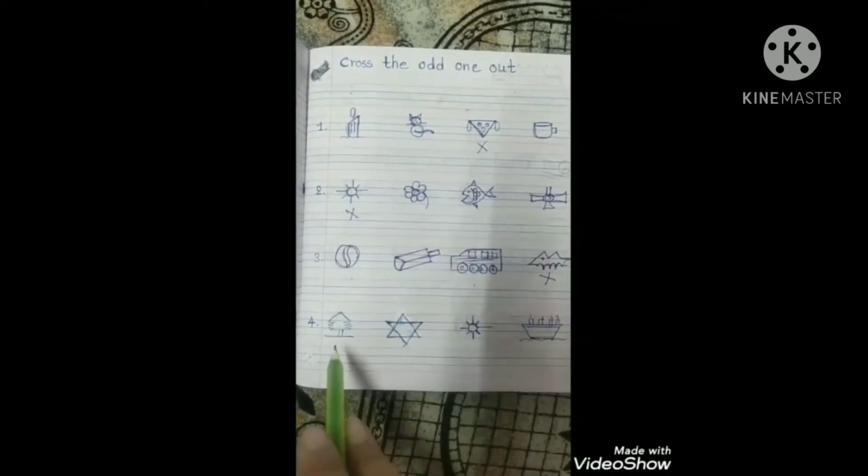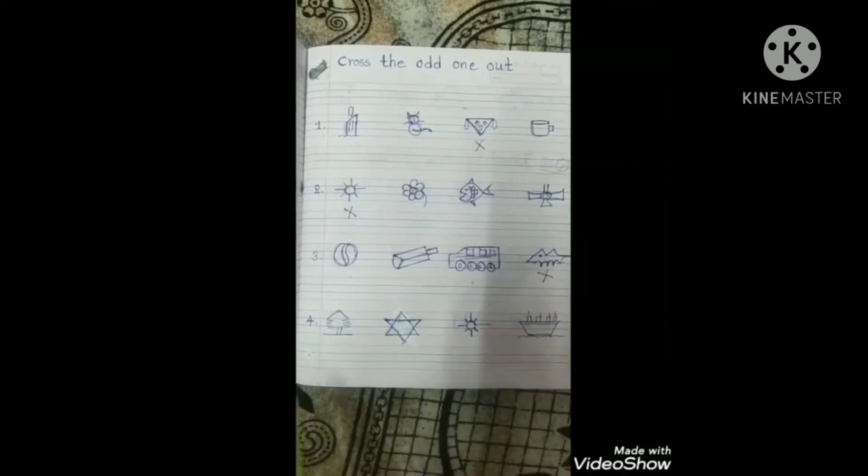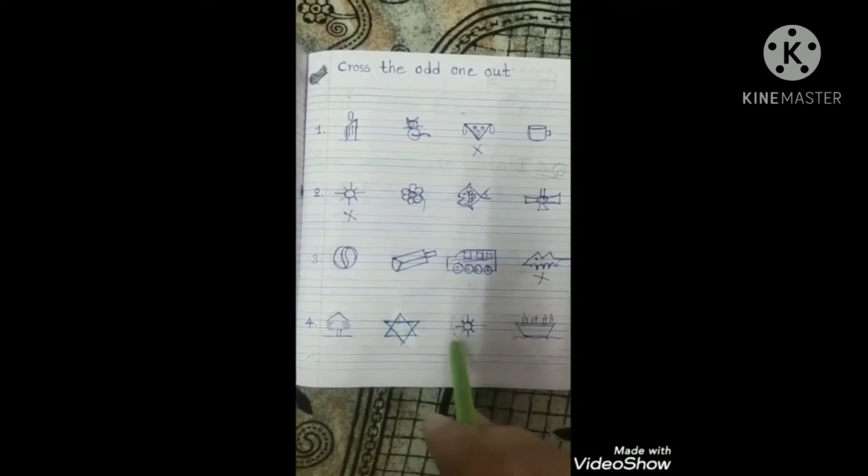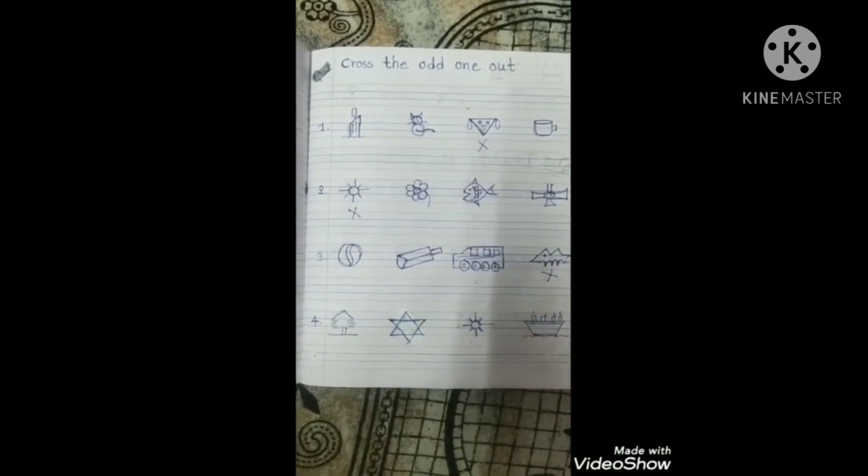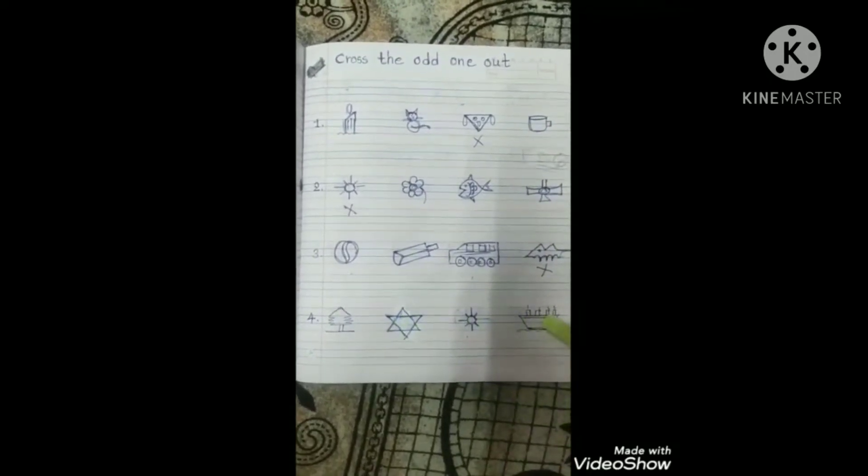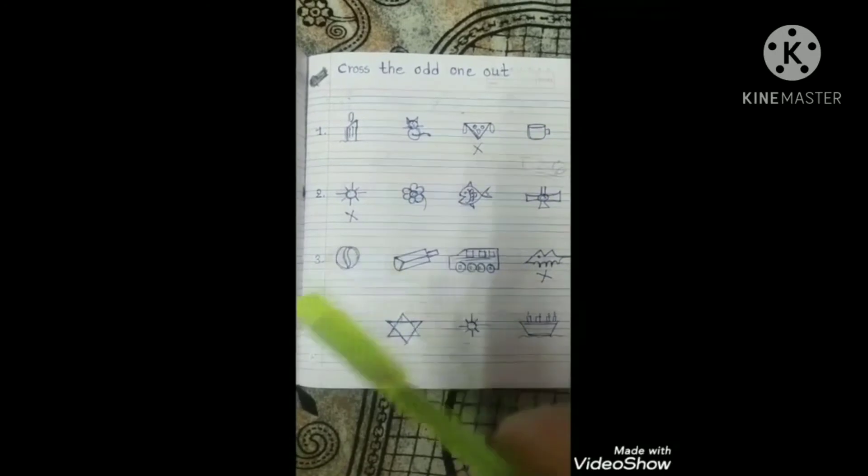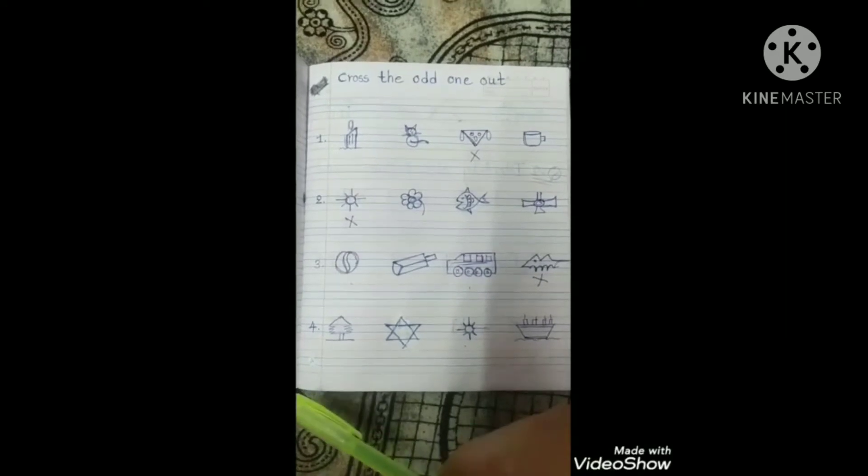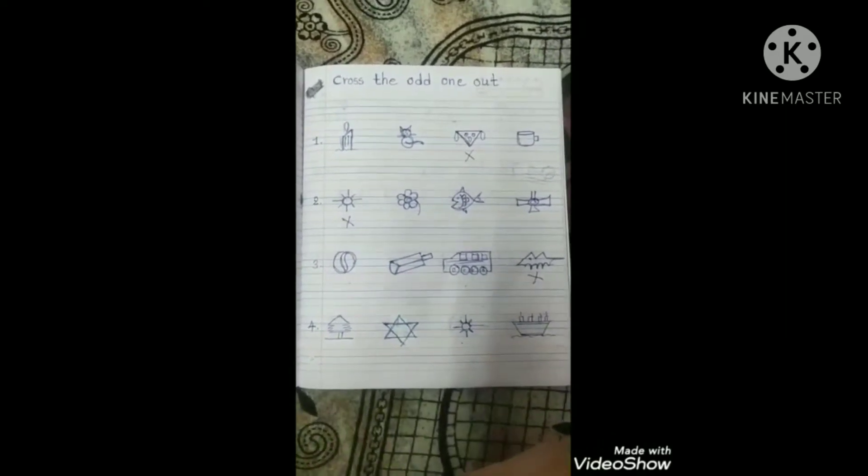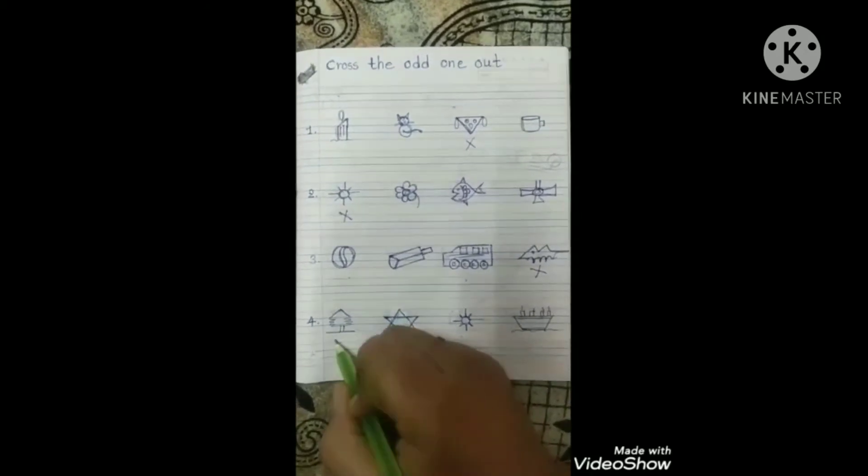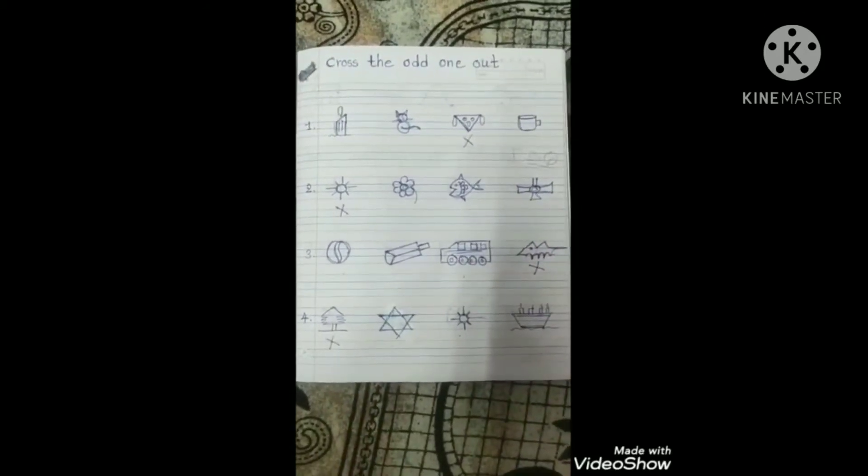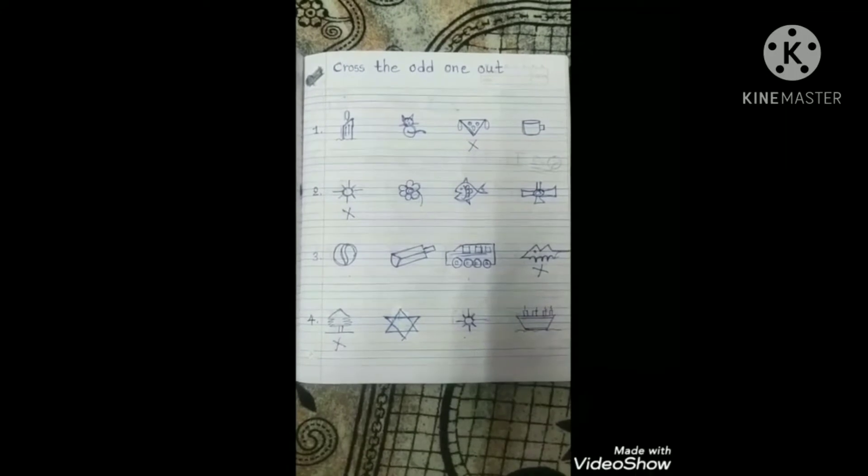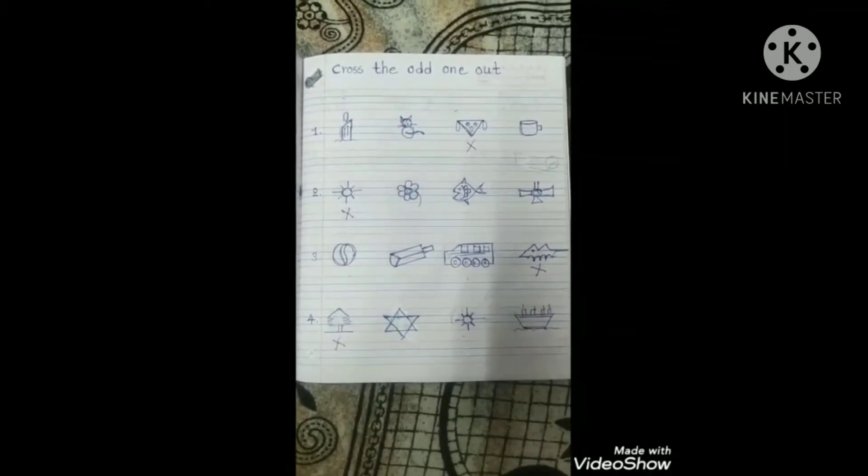Okay, now see the next pictures. X for x-ray, S for star, S for sun, and S for ship. Now see, these three start from S, right? And this one starts from X, X for x-ray, right? So this one is odd, so you have to cross out here. So kids, today we have learned cross the odd one out and you have to write in your English notebook.